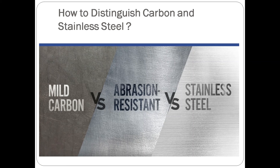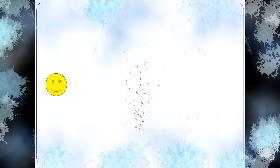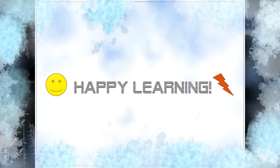In between carbon steel and stainless steel, we have abrasion-resistant steel — the best of both worlds. It is not quite as strong as carbon steel, but has better corrosion resistance than carbon steel. Compared to stainless steel, it is not as corrosion resistant, but it is stronger and harder. That's it — happy learning! Stay tuned for more videos.